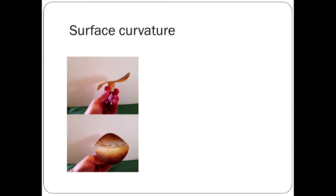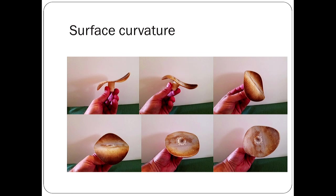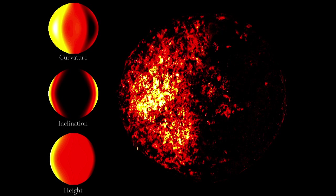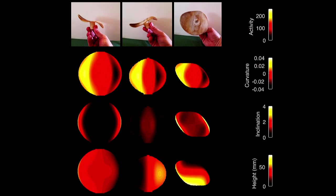You can disambiguate those features by putting this surface in different orientations. That changes the inclination and height of each point, but not the curvature. In any given orientation, you have a map of what each quantity is at each point. When you look at where the termites are active, it matches pretty well with curvature and not with the other two quantities. Tilting the surface in different ways changes the inclination and height maps but not the curvature map, and consistently, activity maps pretty well to curvature.